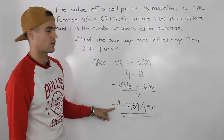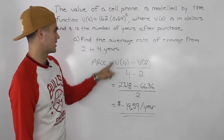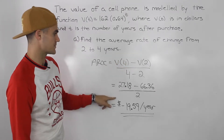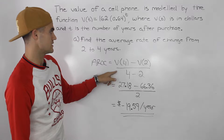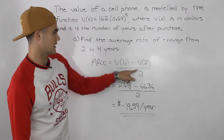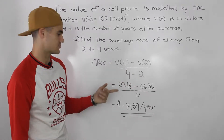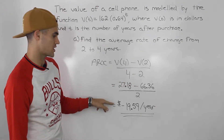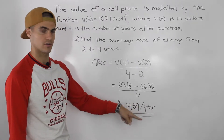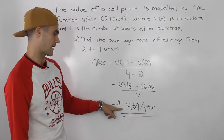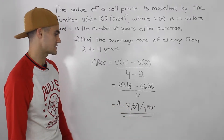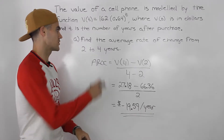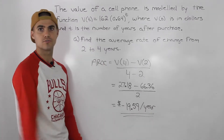Remember, your units here are important because the numerator — the value of the phone — is in dollars, and the denominator is in number of years. So the average rate of change is going to be dollars per year. Negative $19.59 per year is the specific average rate of change from years two to four.